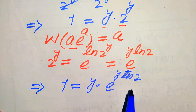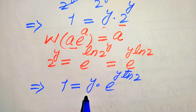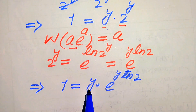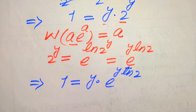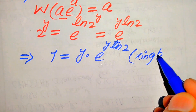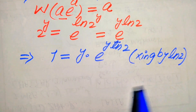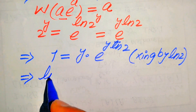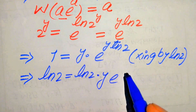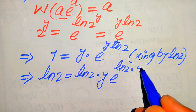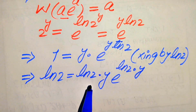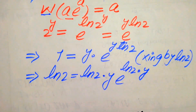To apply the Lambert W function, the exponent of e must be multiplied by the same coefficient as the front factor. The exponent is y times log 2, but we only have y out front — we need log 2 there as well. So we multiply both sides by log 2, giving log 2 equals (y times log 2) times e to the power of (y times log 2). Now the exponent of e matches the coefficient in front, so we are ready to apply the Lambert W function.